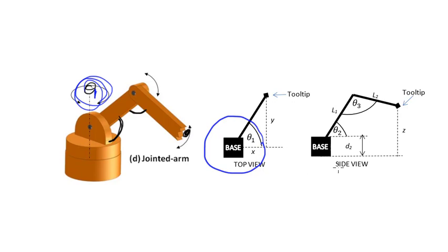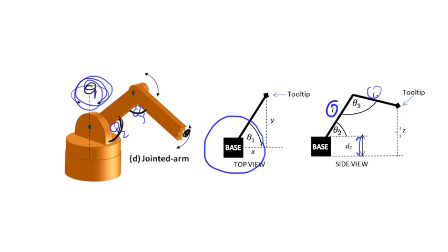The side view gives us these two rotations, θ2 and θ3, our second and third angles. We can use this to determine where the tool tip ends up in vertical space in the z plane. Forward kinematics uses the fact that if we know the lengths of the arms, how tall the base is above the ground, and our three angles, we can actually calculate x, y, and z.